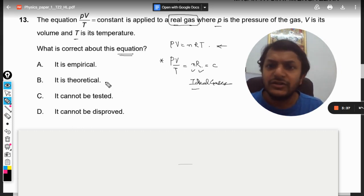So option number B, it is theoretical. So theoretically it is wrong. We can't apply this equation. Theoretically, it is applied only on ideal gases. So on real gases you can't apply, so theoretically it is wrong.